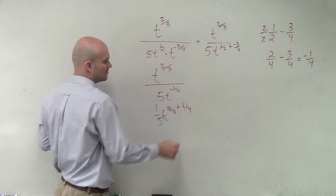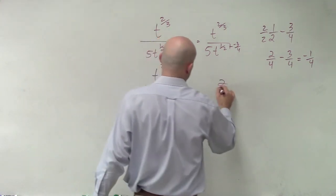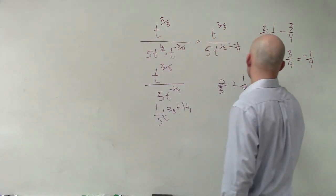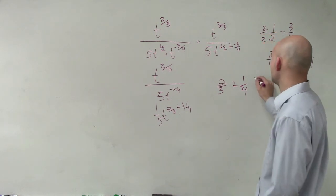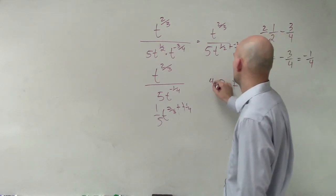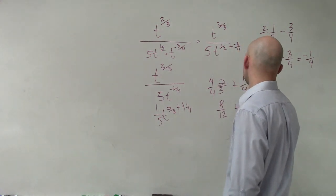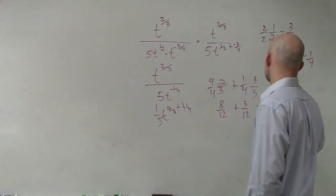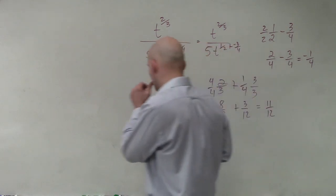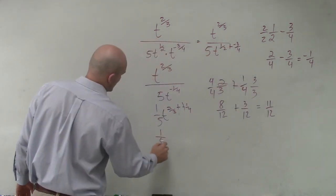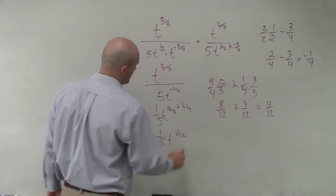So you just divide, becomes a double negative. So now I have 2 thirds plus 1 fourth. Get them to be the same denominator. So you have 8 over 12 plus 3 over 12, which equals 11 over 12. So therefore, I have to the 1 fifth over t to the 11 over 12.